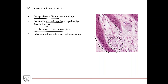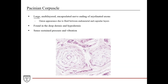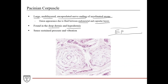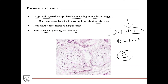Meissner's corpuscles are highly sensitive tactile receptors, and Schwann cells create a swirled appearance within them. Pacinian corpuscles are large multi-layered encapsulated nerve endings of myelinated axons, with an onion-like appearance due to fluid between the endoneural and capsular layers. These are found in the deep dermis and hypodermis because they sense sustained pressure and vibration — the force must travel all the way down to reach them, requiring constant pressing rather than light touch.